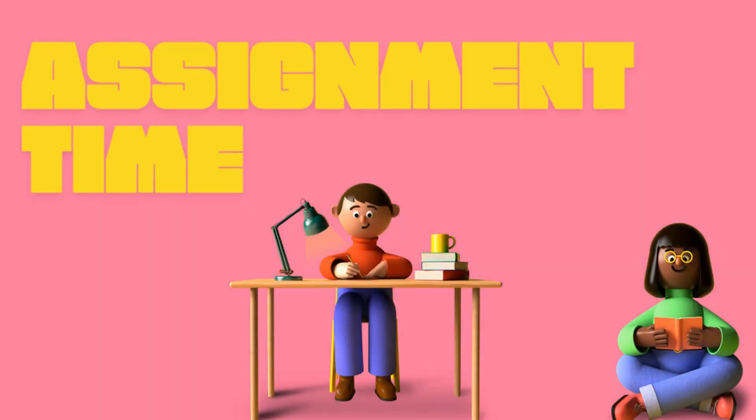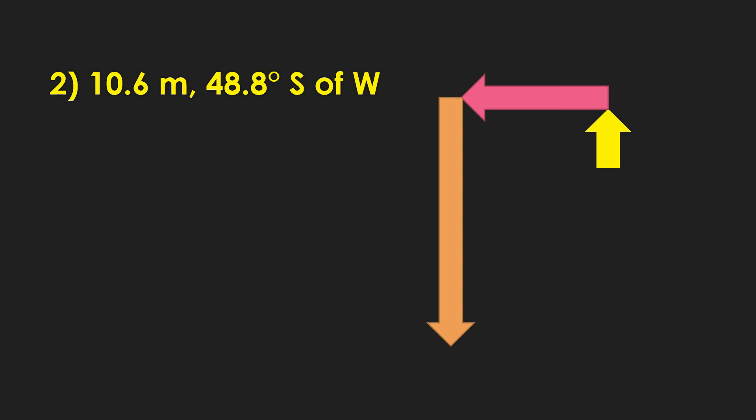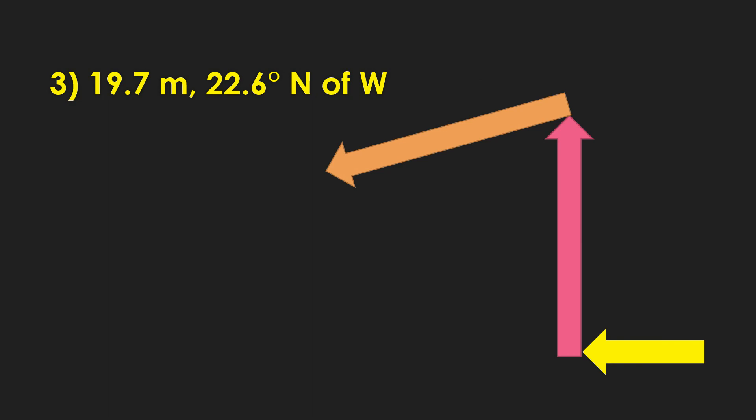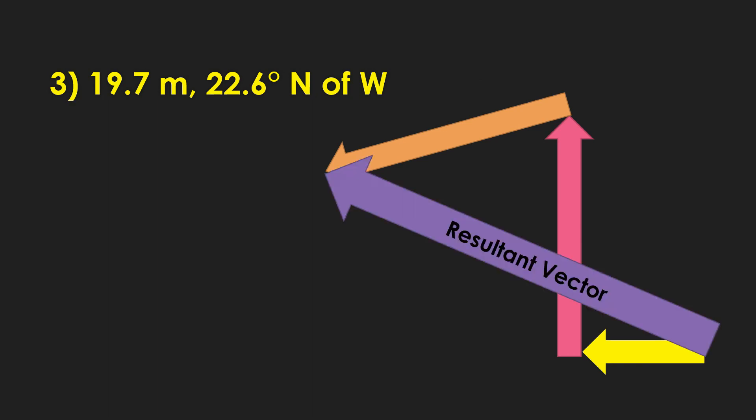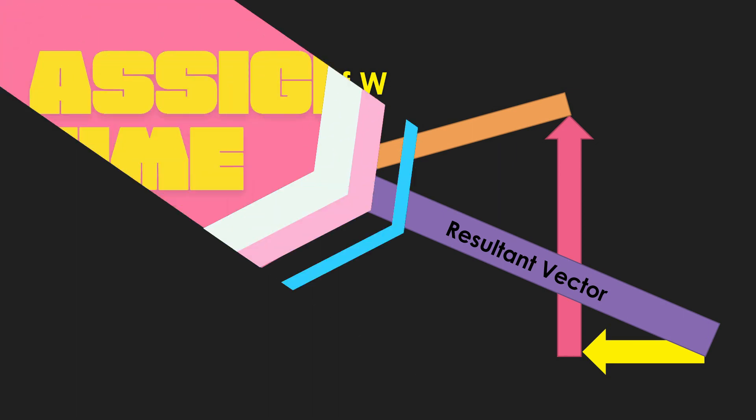Now let's reveal the answers for our previous assignment. We have number 1, 11.1 meters, 63 degrees south of west. Number 2, it's 10.6 meters, 48.8 degrees south of west. Number 3, 19.7 meters, 22.6 degrees north of west. Now it's assignment time.